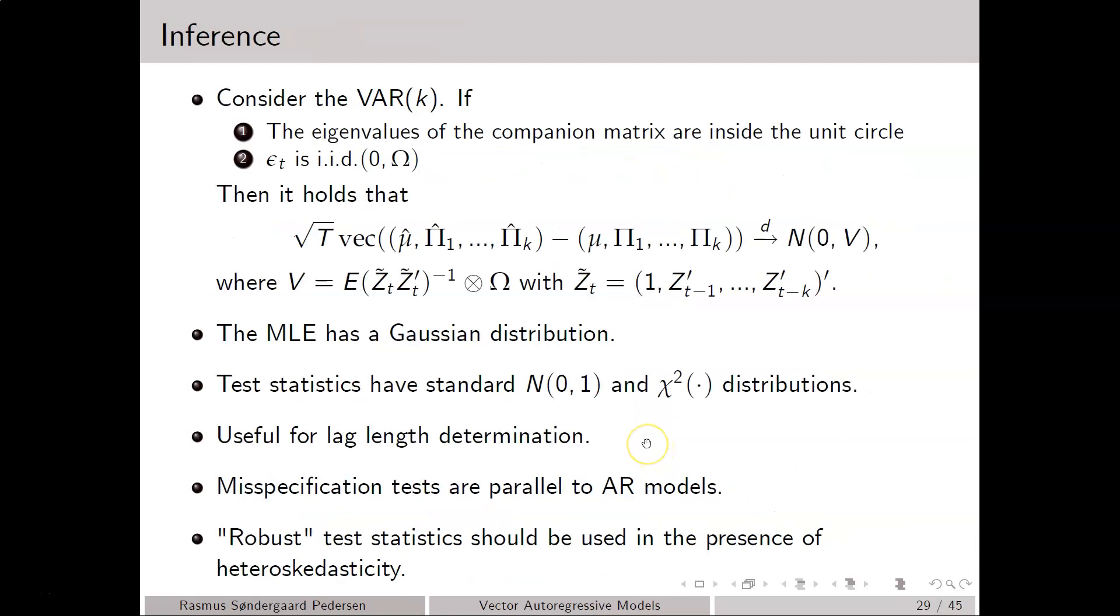In terms of inference, we have essentially the same results as for the autoregressive. So if the eigenvalues of the companion matrix are inside of the unit circle, meaning that if we have stationarity, and if the epsilon_T term, the error term, is IID, which means zero and covariance matrix omega, then the maximum likelihood estimator is consistent and asymptotically normally distributed with some variance-covariance matrix given by a matrix V given by this expression here.